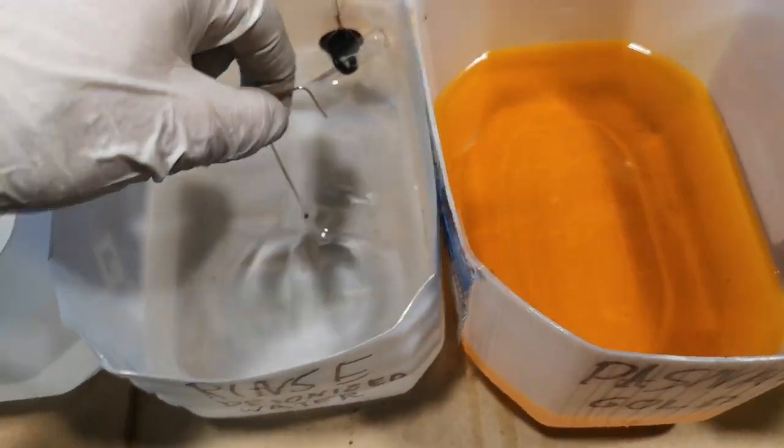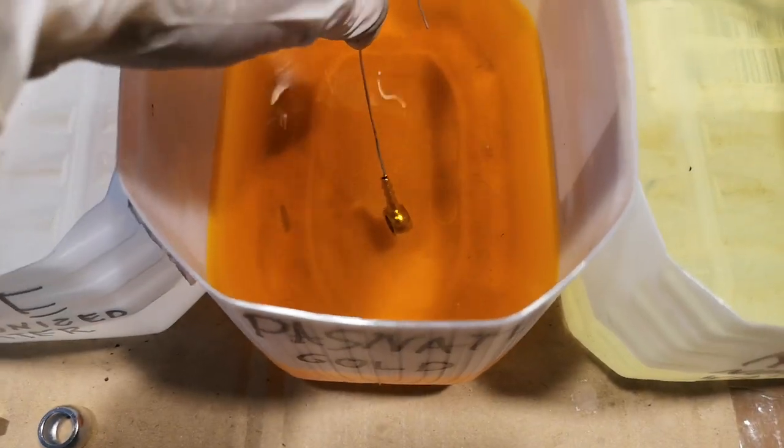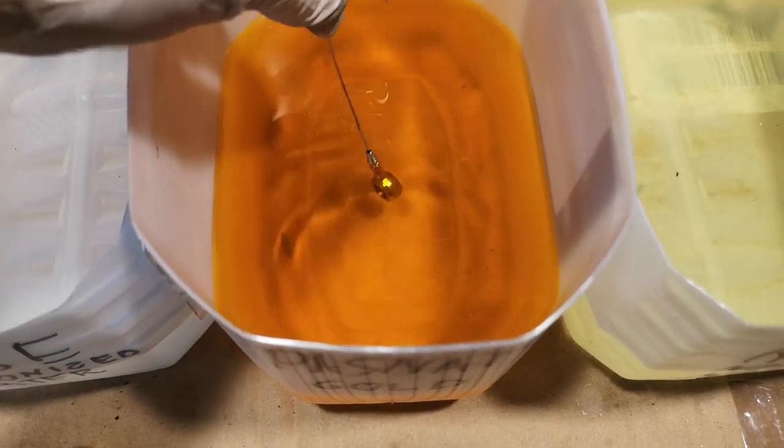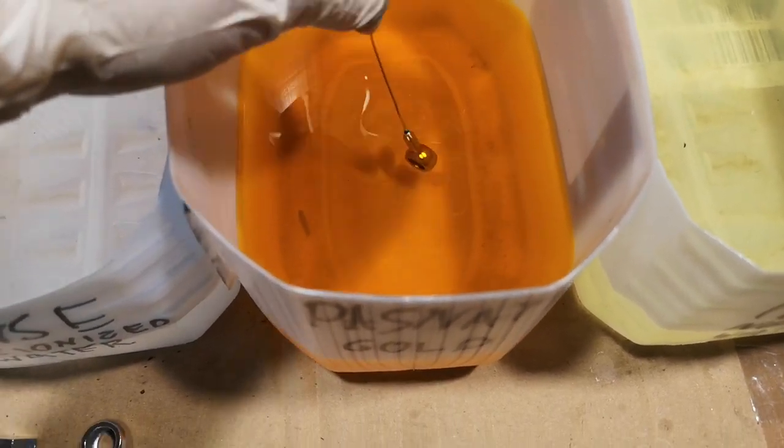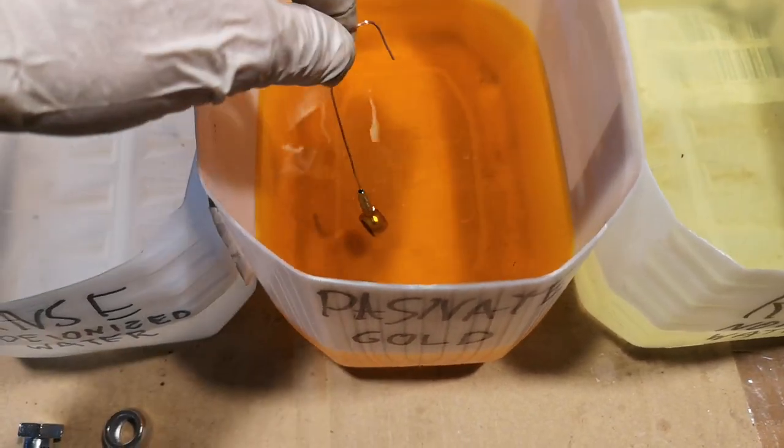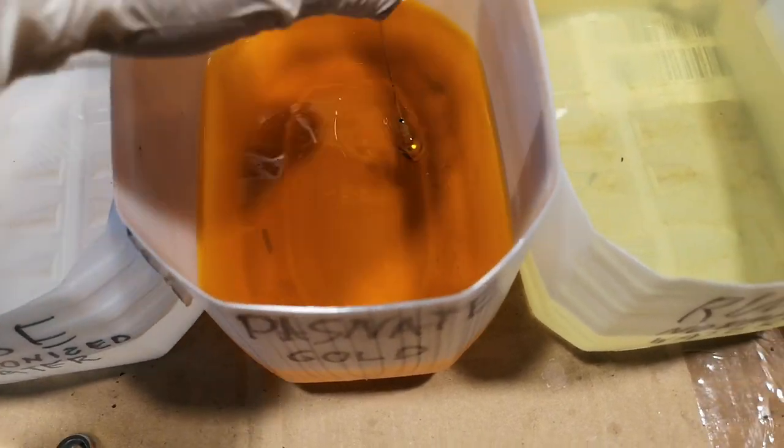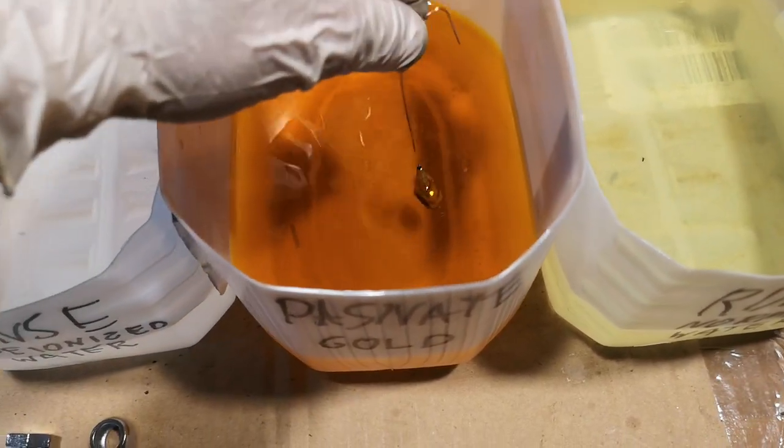Then we're going to rinse it. And then after rinsing, it goes into the passivate solution. We keep it in the solution for about 10-20 seconds. And you don't want to shake this too violently because you will shake the coating off.